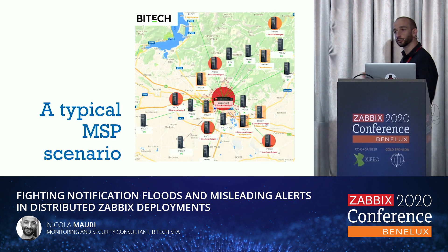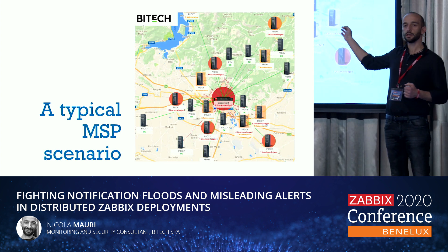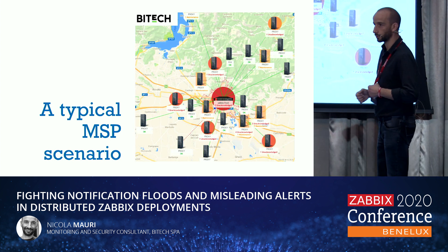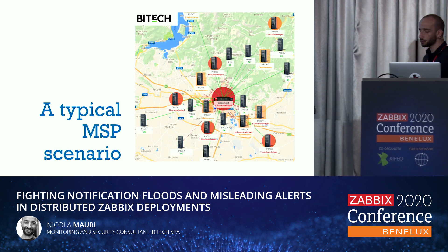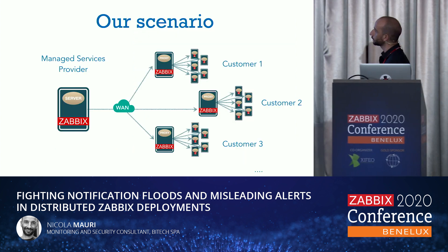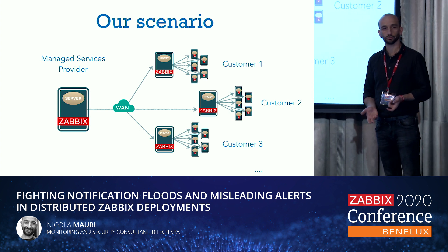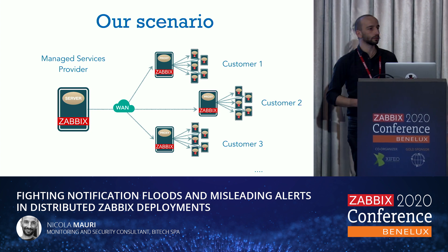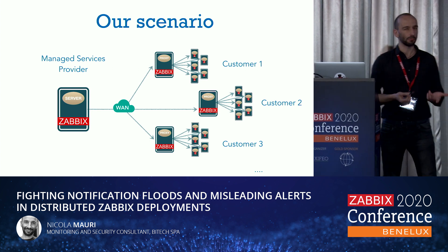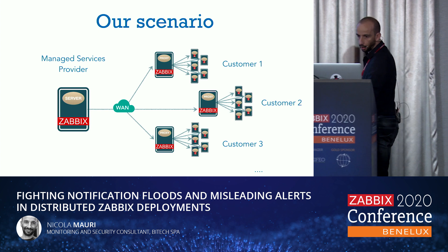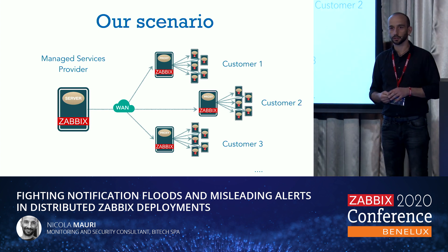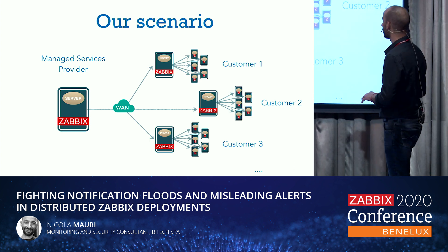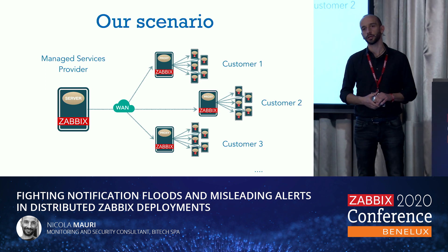If you are a monitoring provider, you typically deploy a single central Zabbix server instance to monitor several independent remote customers. Each customer has one or more Zabbix proxies deployed into their local network, and often they are active proxies. They connect to the Zabbix server using the internet or some other unreliable connection. So this is what we call monitoring as a service — your customers are going to pay you for monitoring their infrastructure.